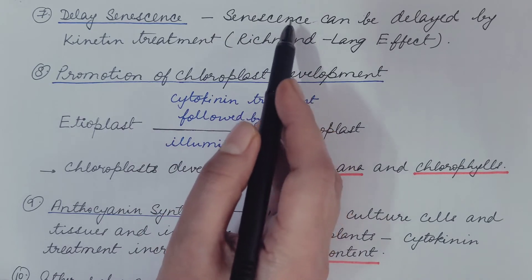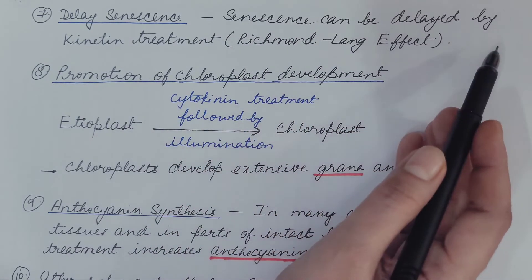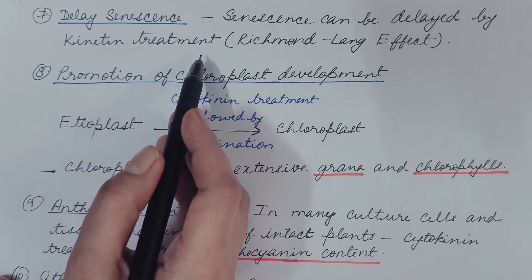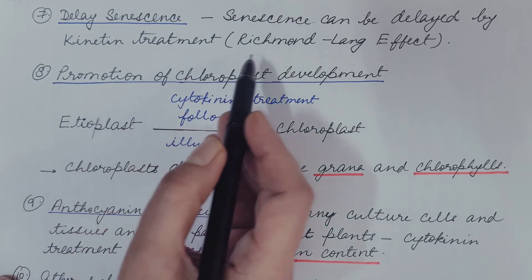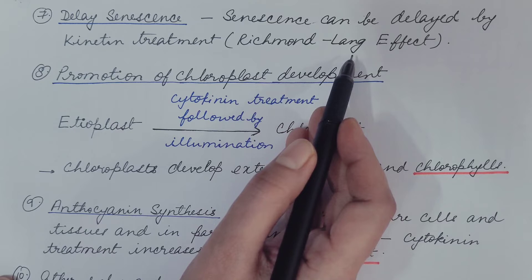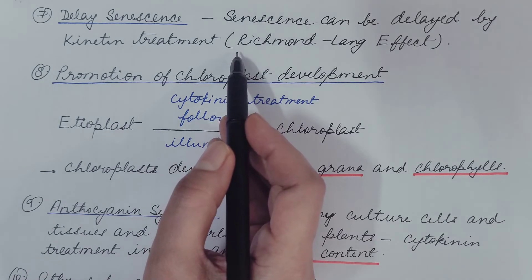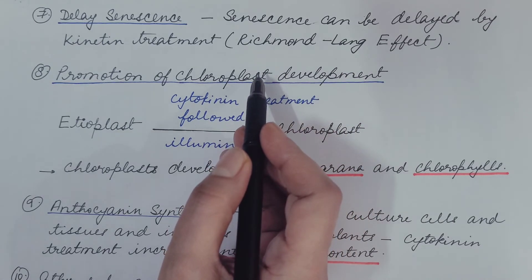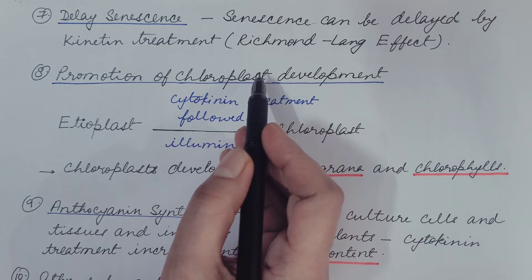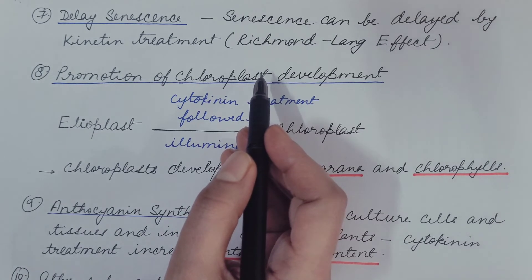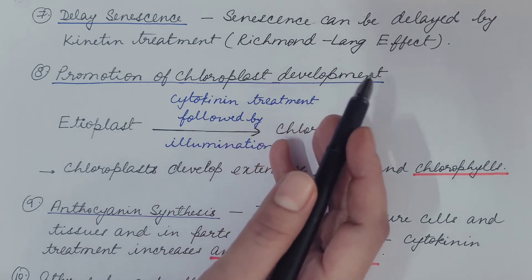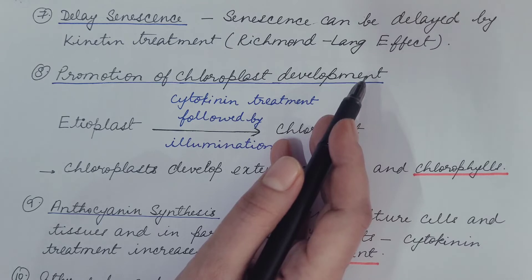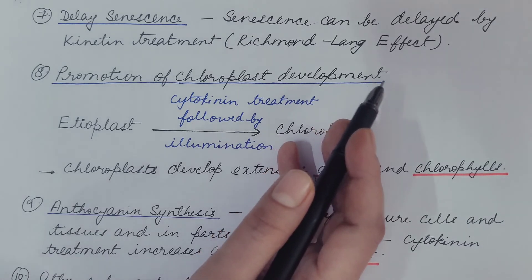Seventh is delay of senescence. Senescence, that is aging, can be delayed by kinetin treatment. This was shown by Richmond and Lang in 1957; hence it is known as the Richmond-Lang effect. This is possible because kinetin treatment prevents degradative catabolic processes by repressing the activity of a few hydrolyzing enzymes like protease, RNase, DNase, etc.